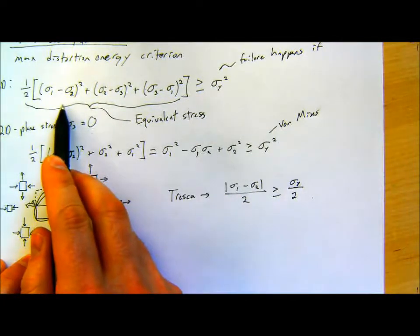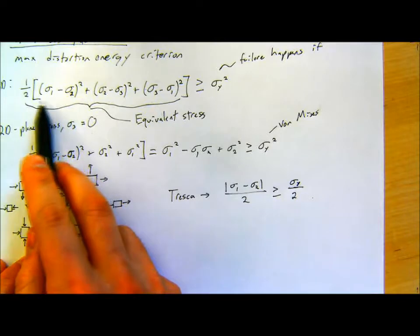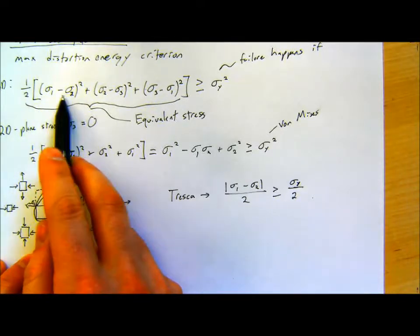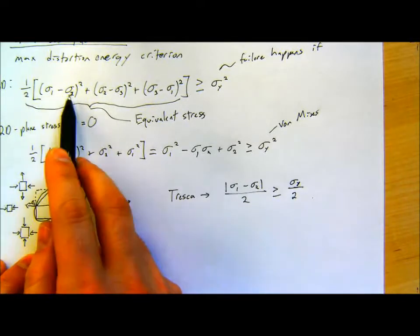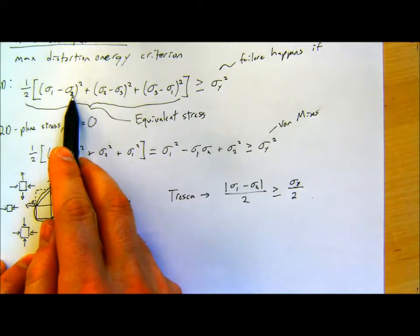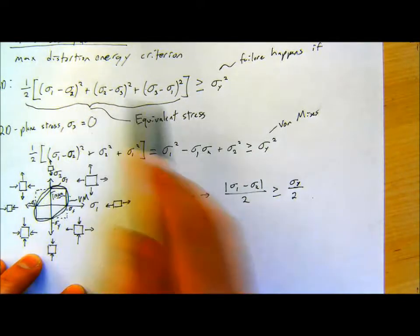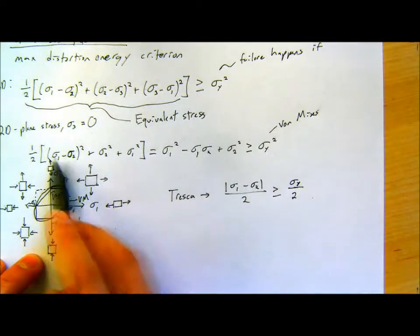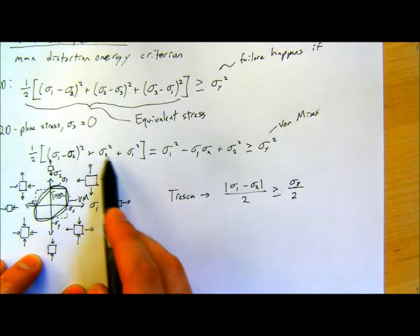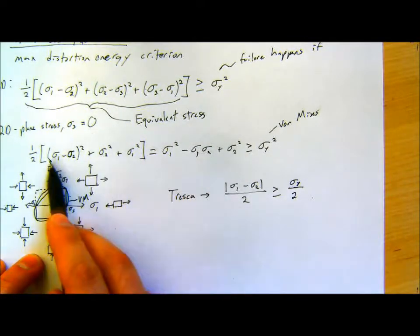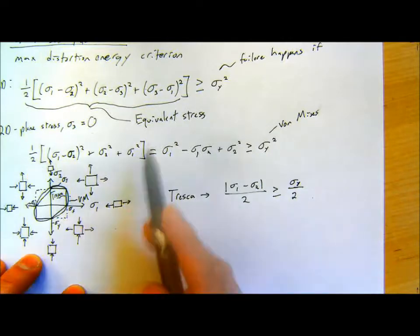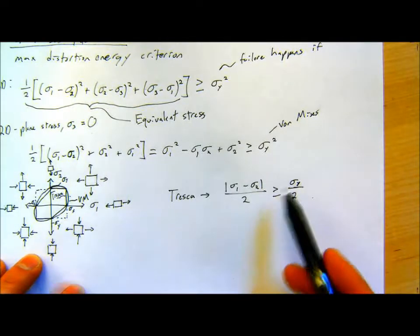Here, when you expand: sigma1 squared minus 2 sigma1 sigma2 plus sigma2 squared — then there's sigma2 squared and sigma1 squared. This comes into that, and the half cancels all those 2's out.